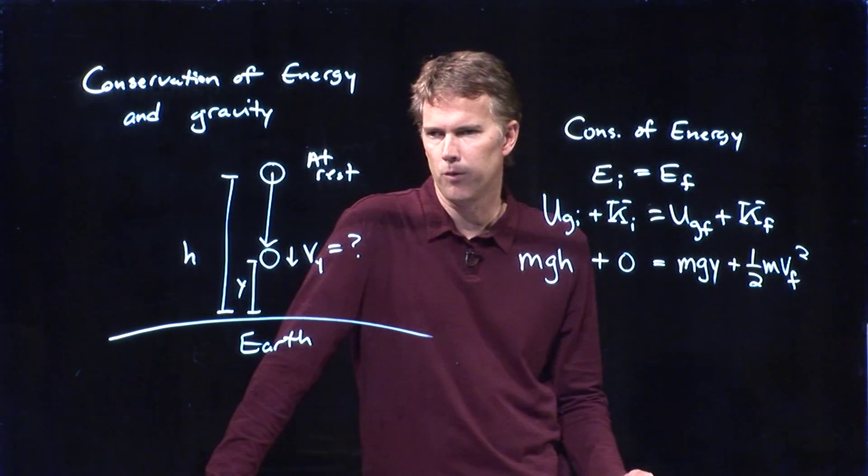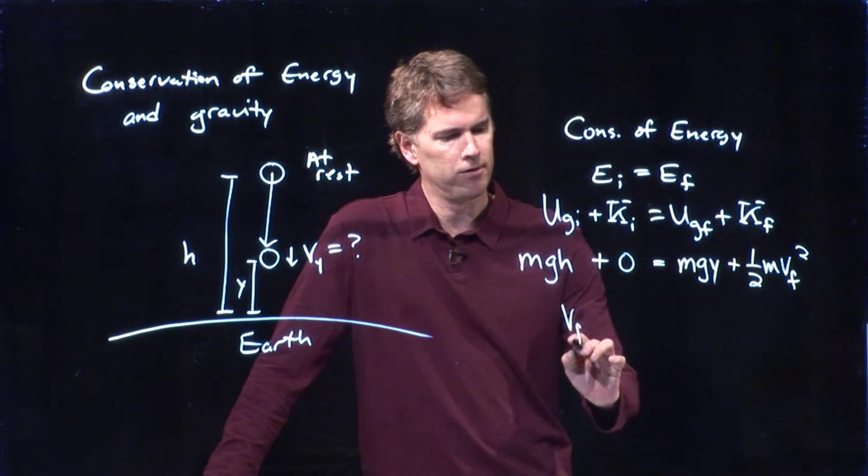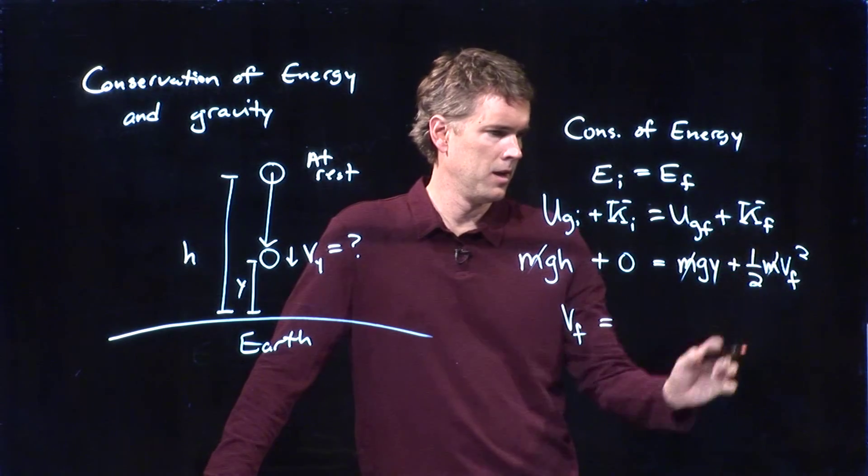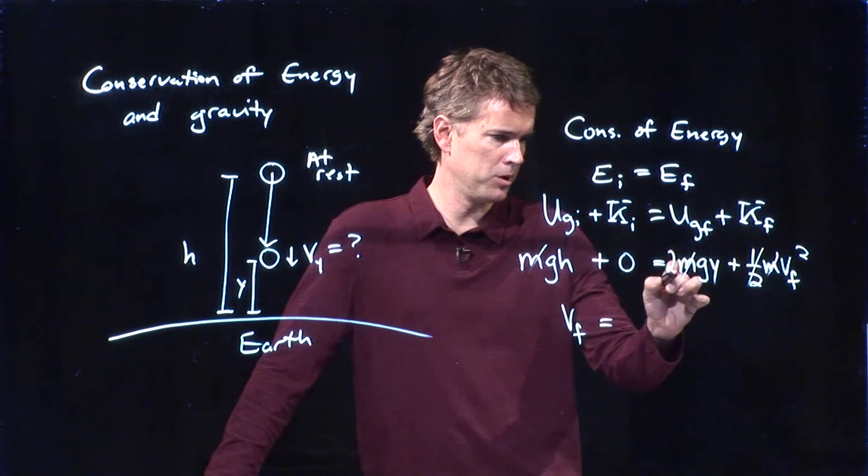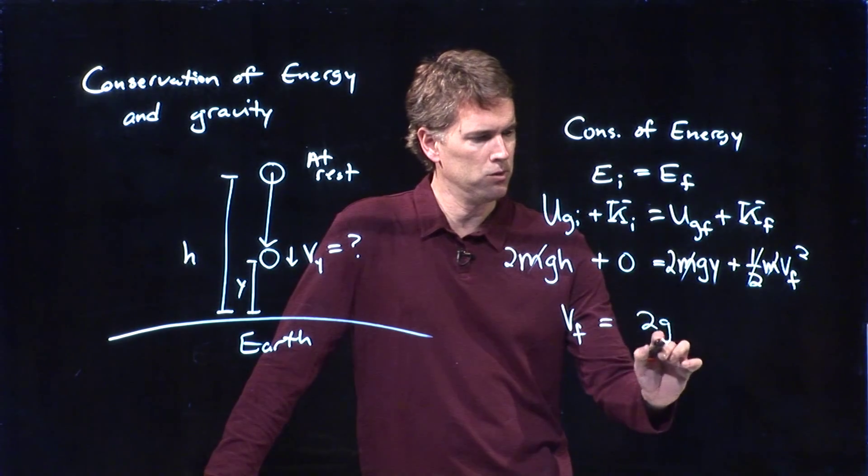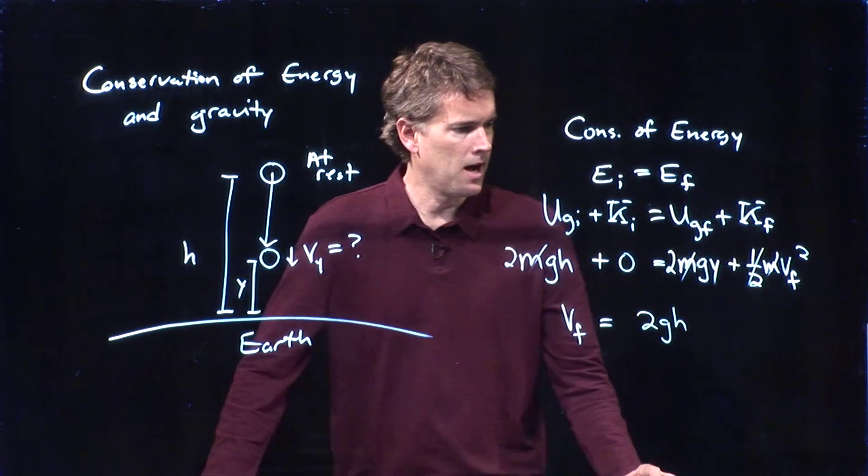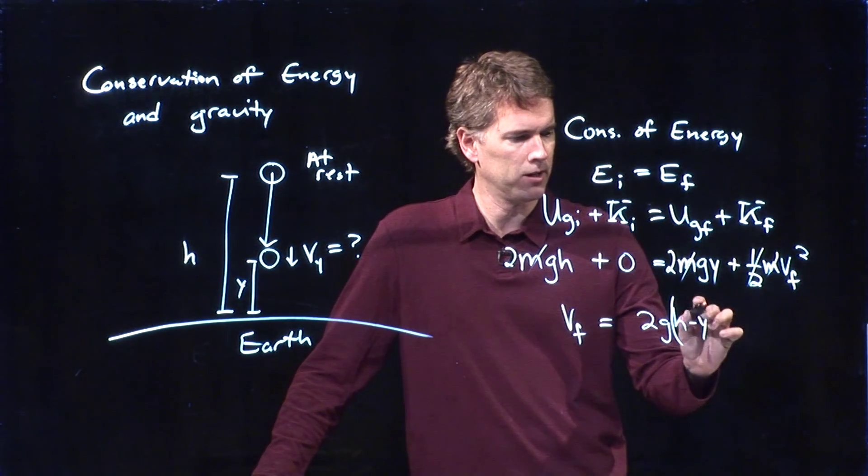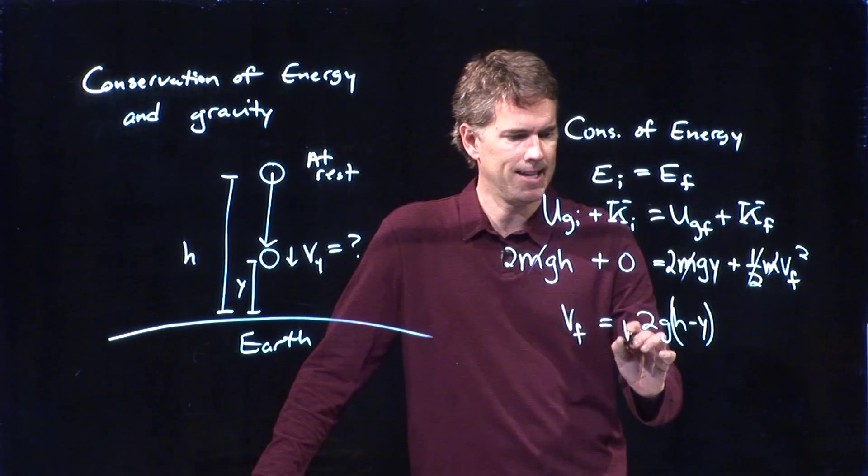And now we can solve this for VF. VF is equal to what? We can cross out all the M's. If I multiply everything by two, I cross out the half, I put a two there, I put a two there. And we get 2GH from this guy. I have to subtract 2GY. So I can slip that in right there. And that is it.